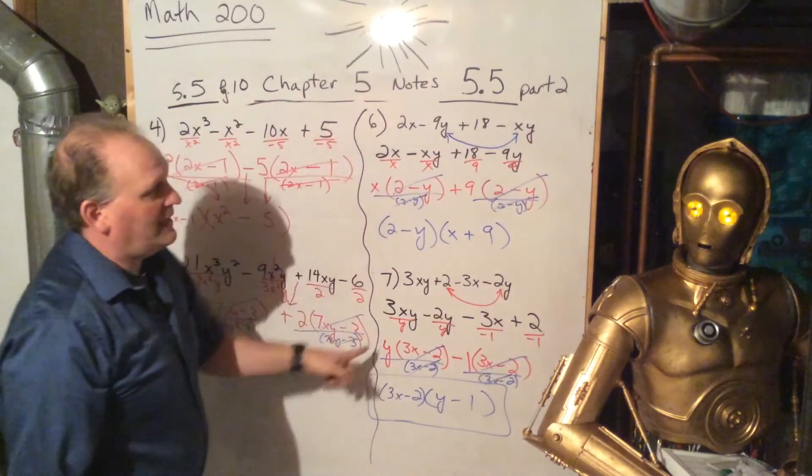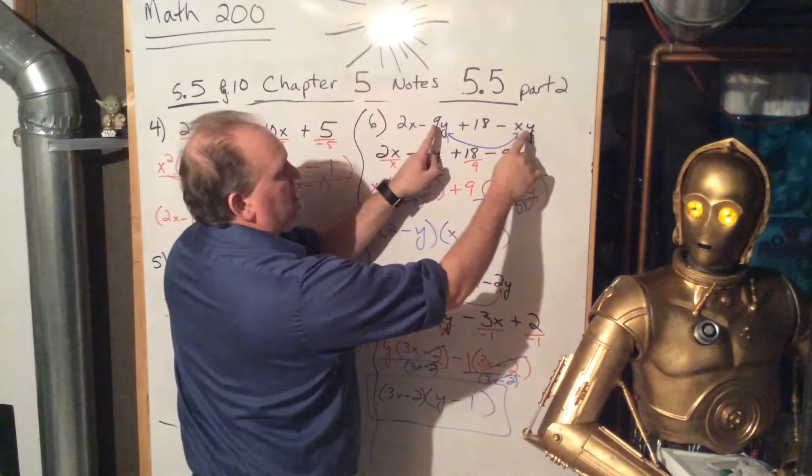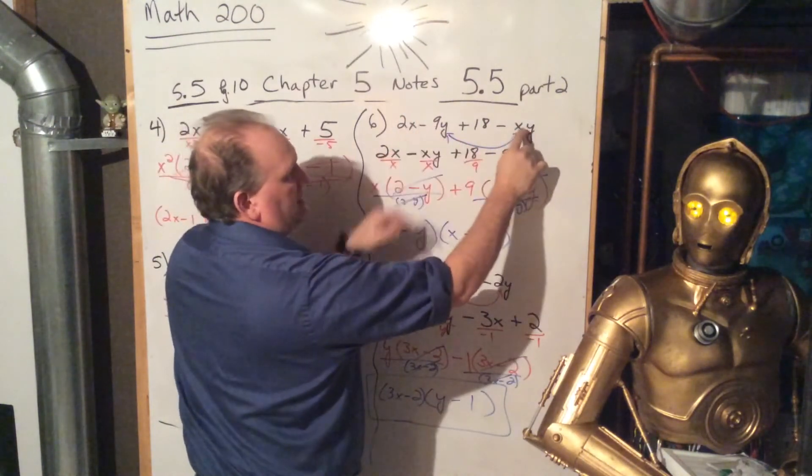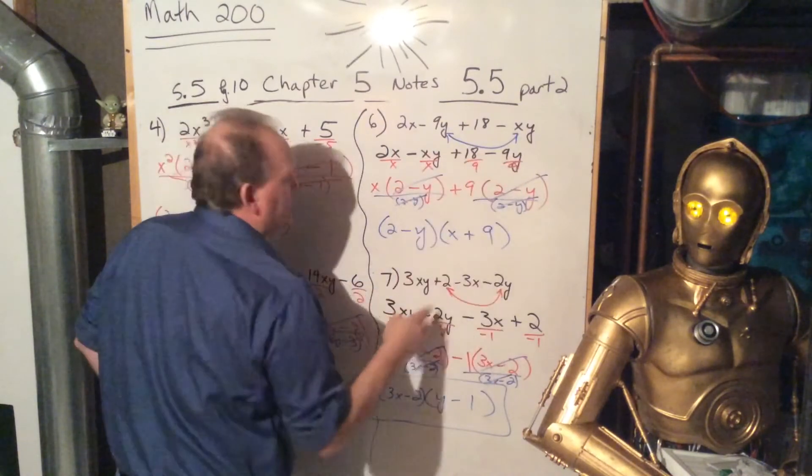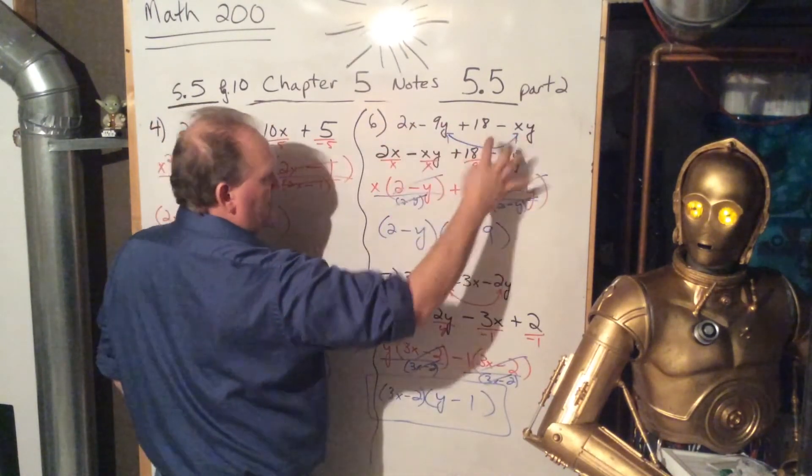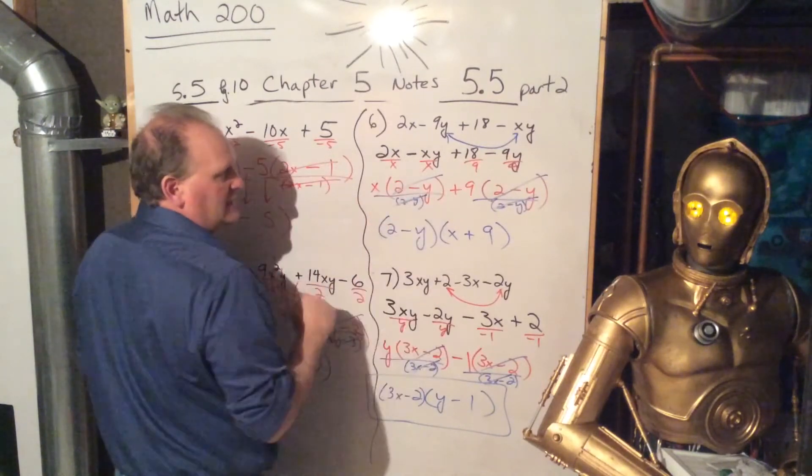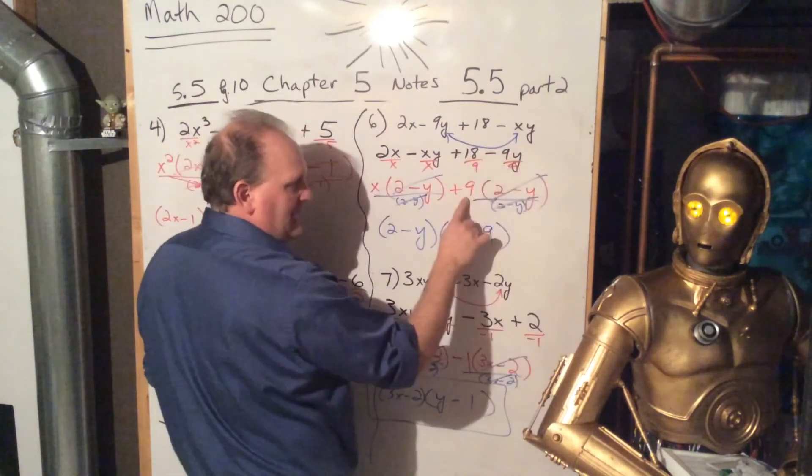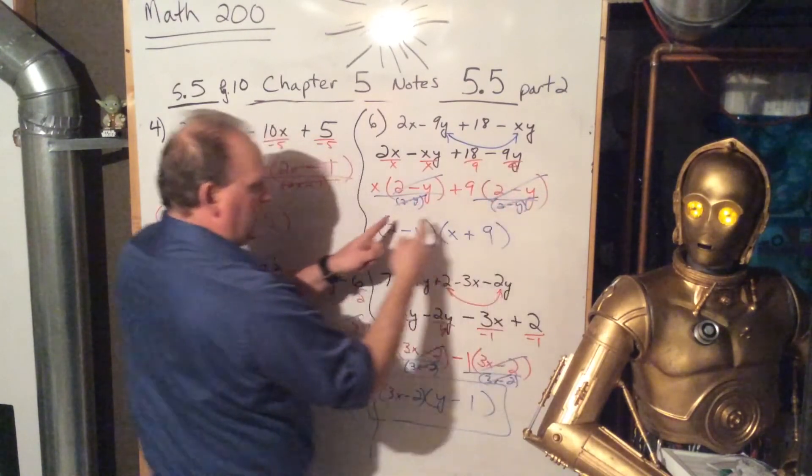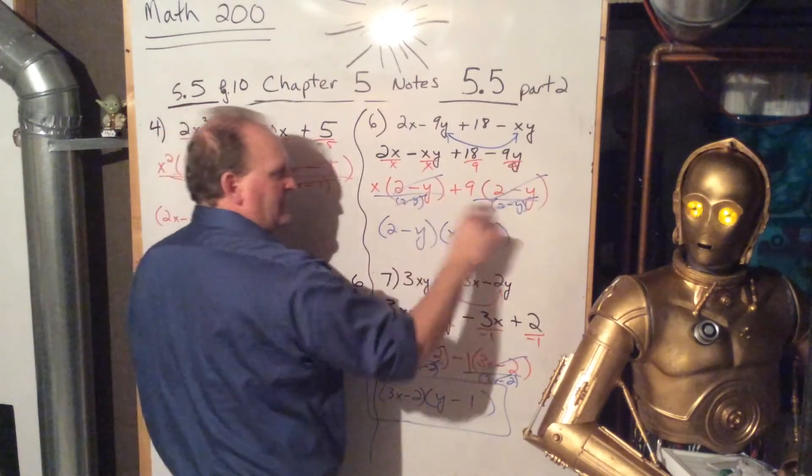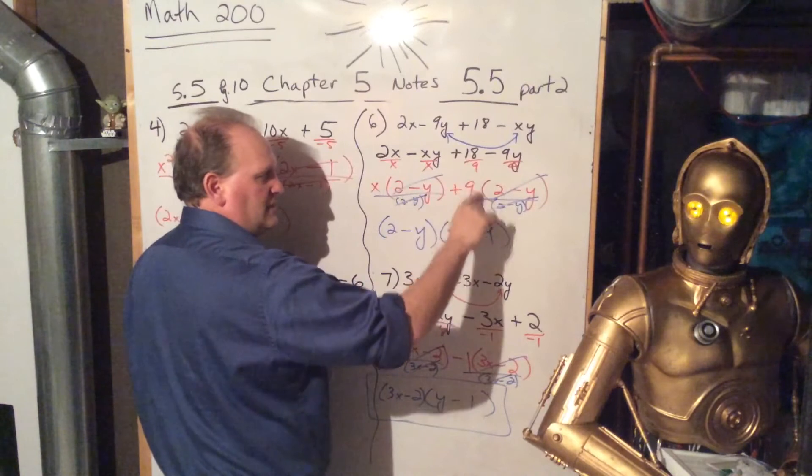Number 6 and number 7 were trickier, because we had to actually switch positions with the minus xy and the minus 9y, because otherwise you couldn't factor anything out. So here, I can factor the x out now, I get 2 minus y. Here, I can factor the 9 out now, I get 2 minus y. 2 minus y twice, comes out once, divided by 2 minus y, cancel, x plus 9.